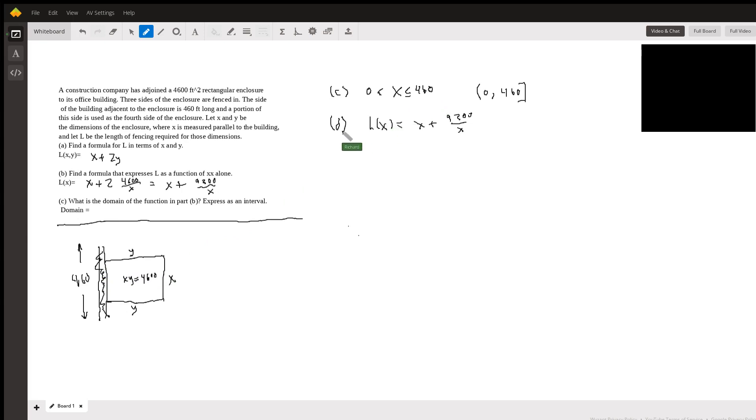Now I'm adding a part D here because usually they would be asking for what's the best value for x—what's going to minimize the amount of fencing and still give us a 4600 square foot enclosure. When you graph this thing on your calculator, it looks a little like this on the right, and it's sort of the mirror image on the left.